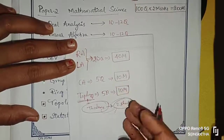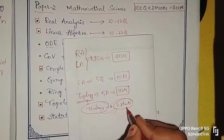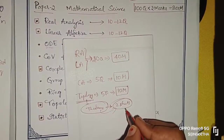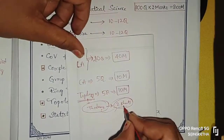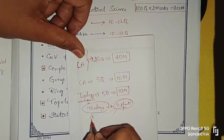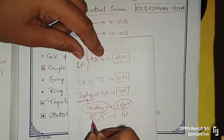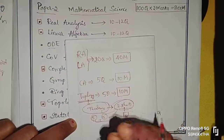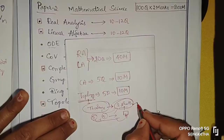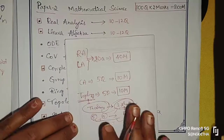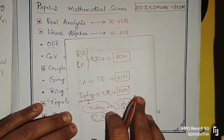You need to make one chapter summary because this is the last moment. You cannot keep focusing on concepts at the last moment. Just go through the theorem statements - five statements per day. Especially one week before the exam, if you keep reviewing these statements, you can easily cover topology.